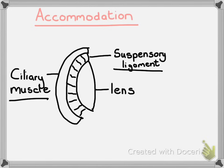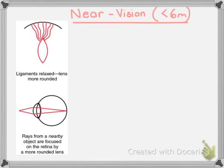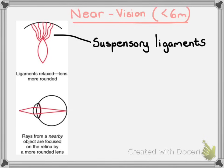Let's look first at what it means to say that you are looking at something near, which means you are looking at an object that is less than six meters away from you. If we look at the diagram, you will notice that the suspensory ligaments have slackened. The reason for that is because the ciliary muscle, which sits along the outside of the suspensory ligaments, has contracted.